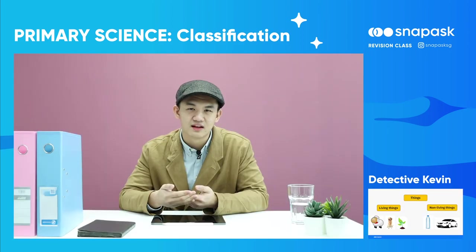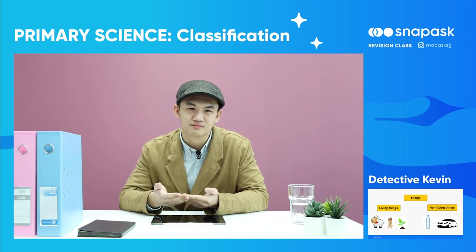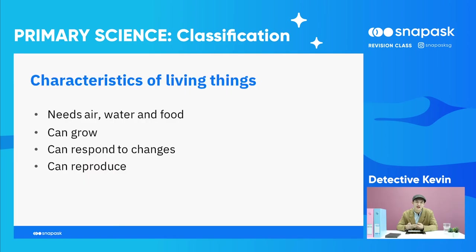Now let's find out. Living things — what do they have? What are some characteristics of living things? Firstly, living things need air, water and food. Next, living things can grow. Living things also respond to changes, and living things can reproduce. By knowing all of this, we can determine if our missing person is indeed a living thing.